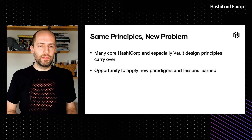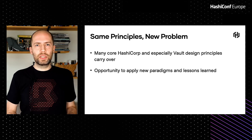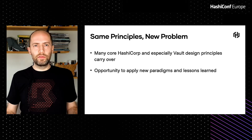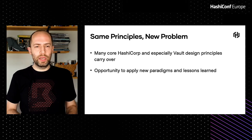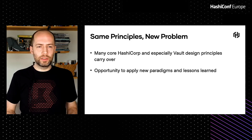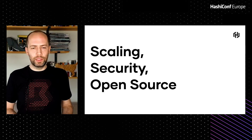A lot of core HashiCorp and especially Vault design principles carry over, but this was a really good time to take a step back and think: five years after Vault, what lessons have we learned? What principles can we apply, pulling in not just from Vault but the rest of the company as well? I want to talk about three of the principles we had in mind — specifically scaling, security, and open source.